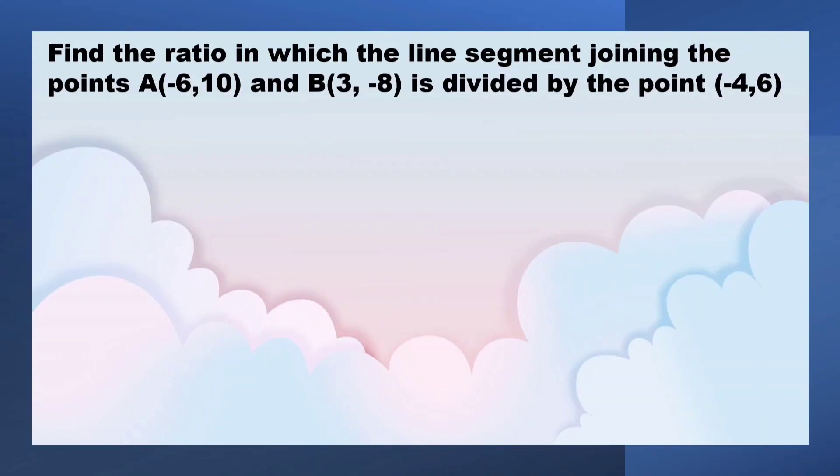Find the ratio in which the line segment joining the points A(-6,10) and B(3,-8) is divided by the point (-4,6).